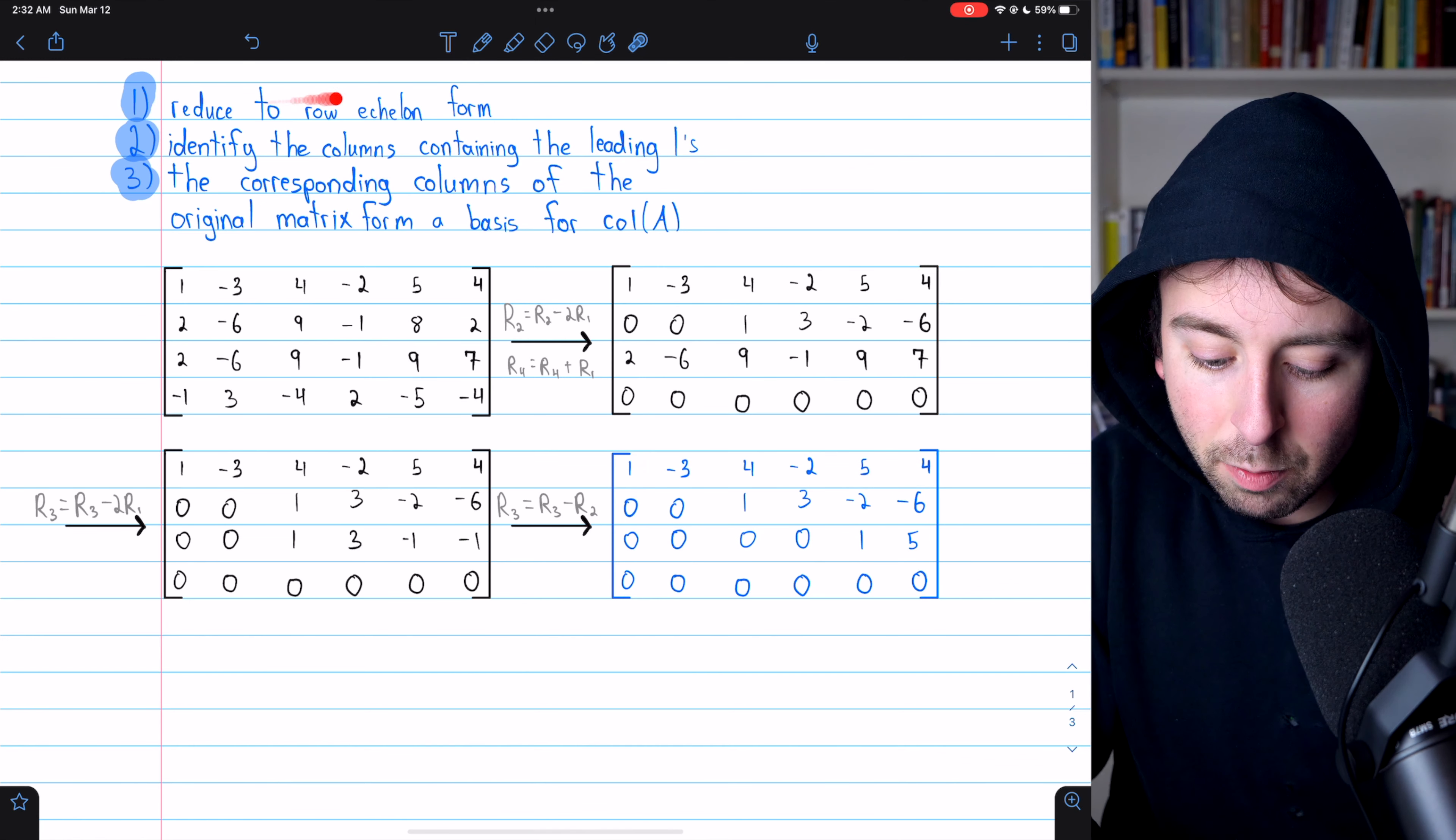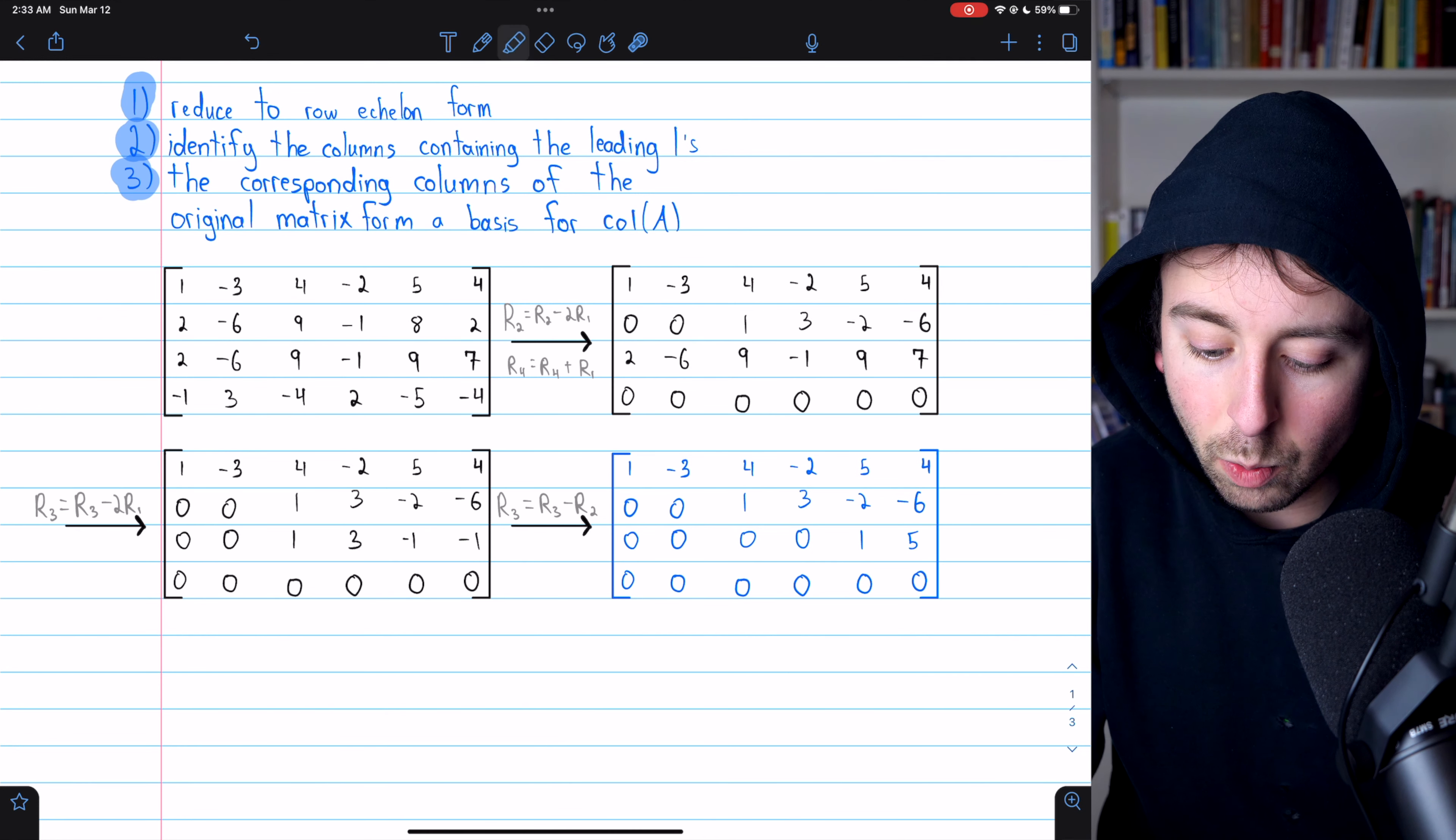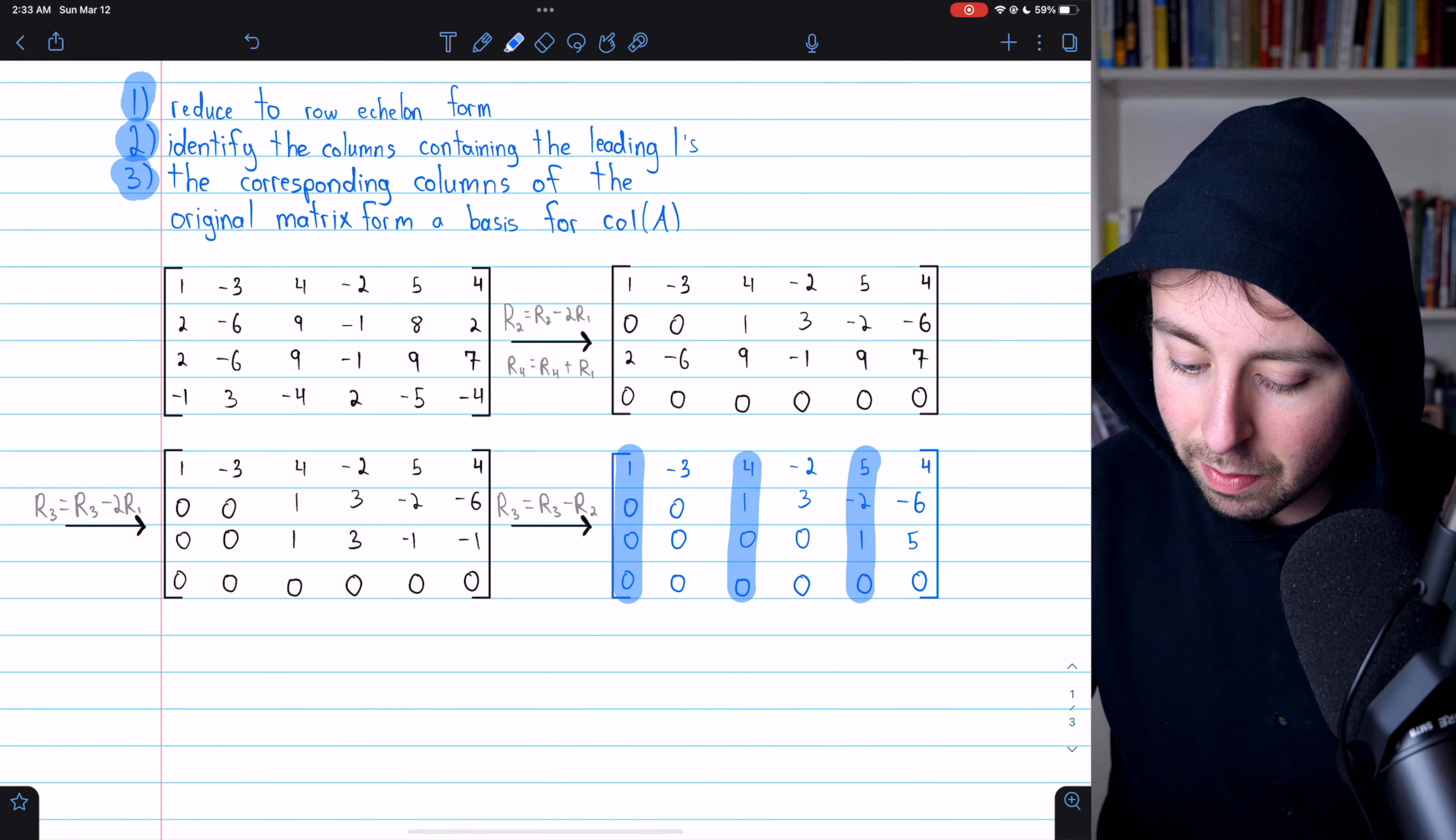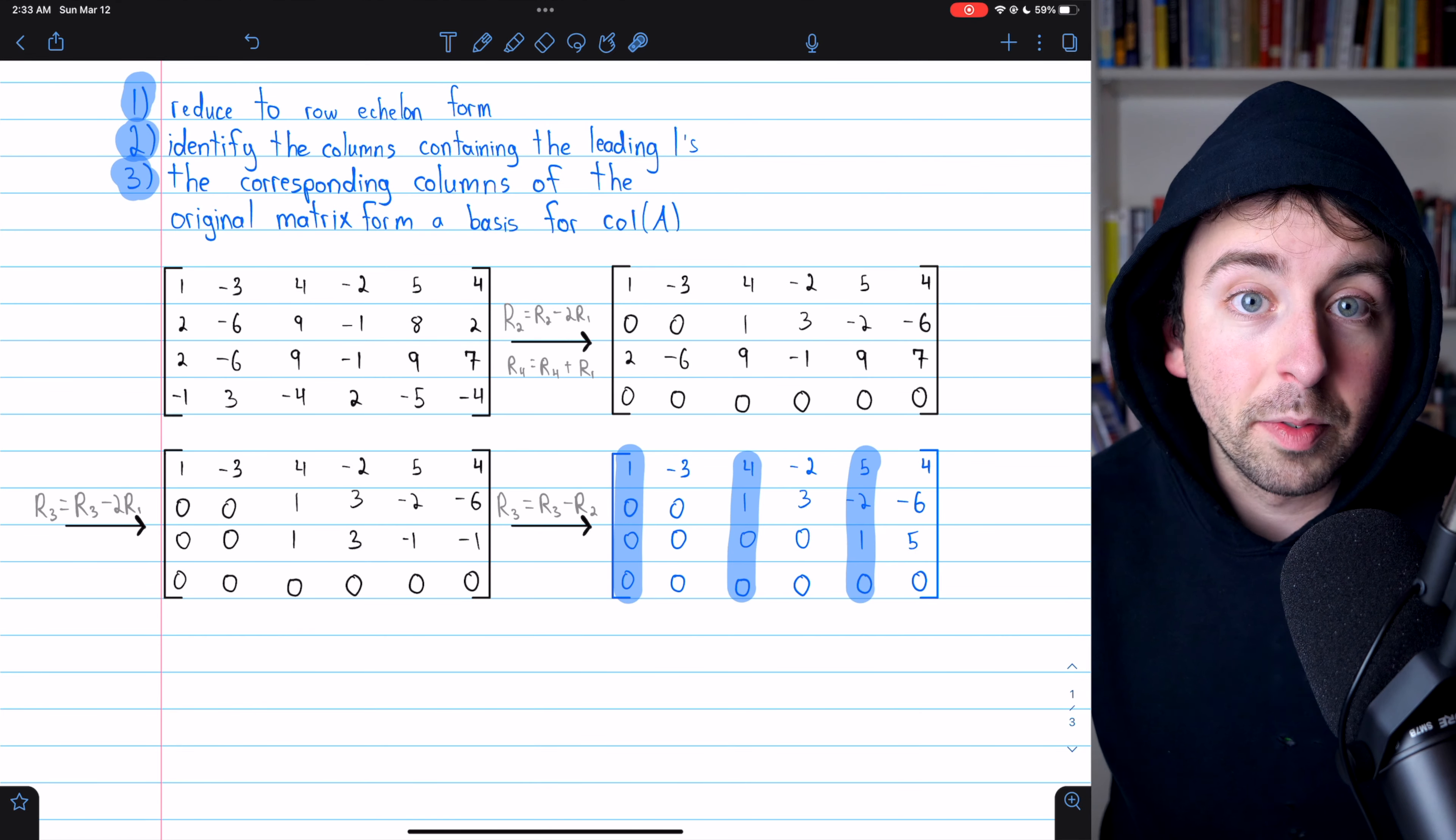So now that we've got it in row echelon form, the second step is to identify the columns that contain the leading ones. The leading ones are in the first column, in the third column, and in the fifth column, right? You see all those leading ones. So those are our columns of interest.